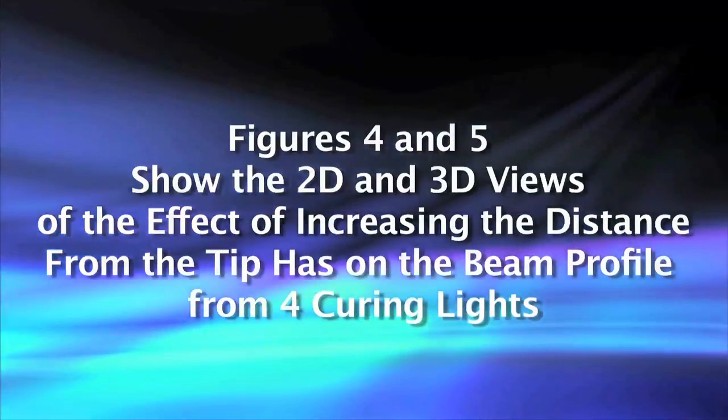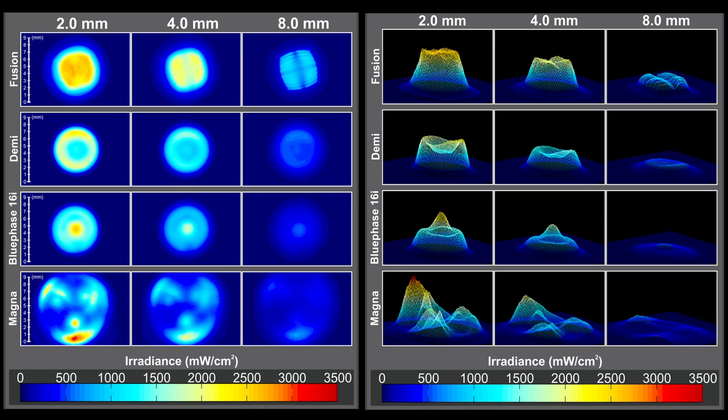Figures 4 and 5 in the article summarize the effect of increasing the distance from 2 to 4, and then to 8 mm, on the beam homogeneity and the irradiance from the four lights tested in the study. As you can see, there is quite a difference in the beam homogeneity and the beam profiles between the four different curing lights.